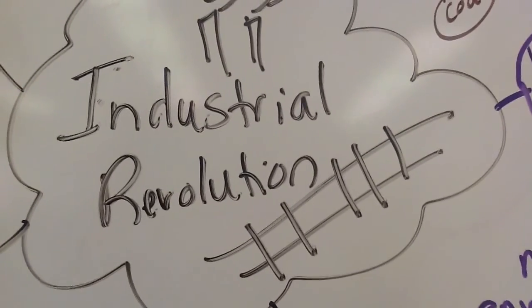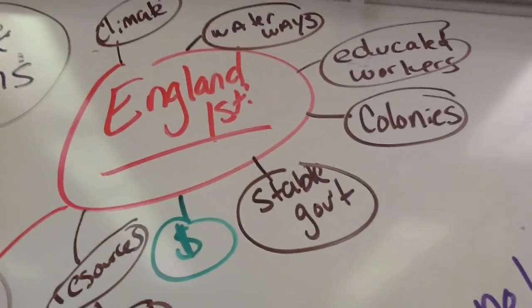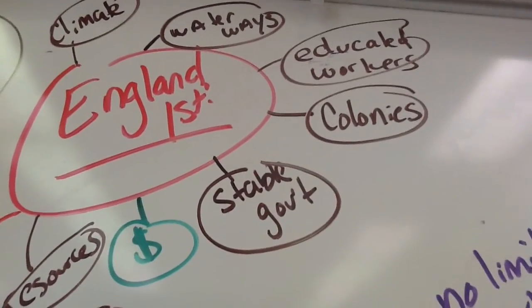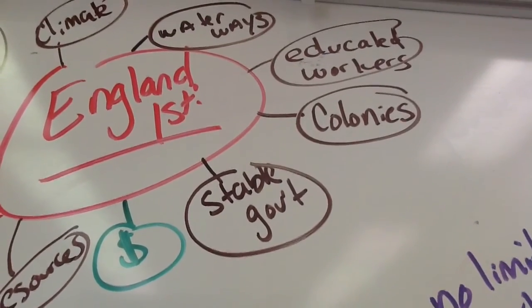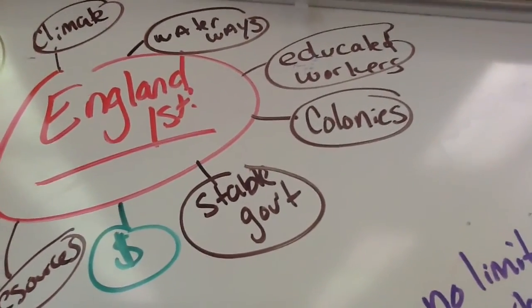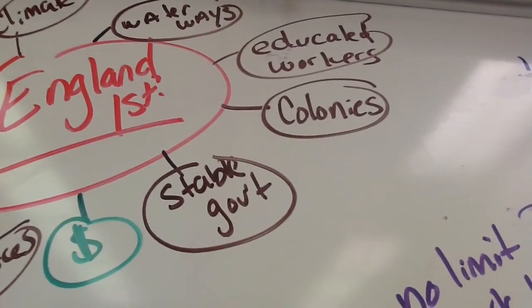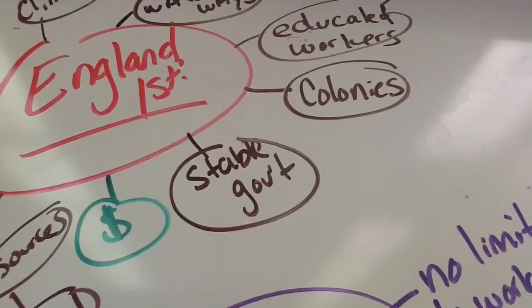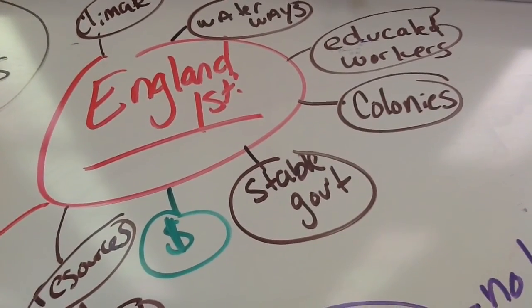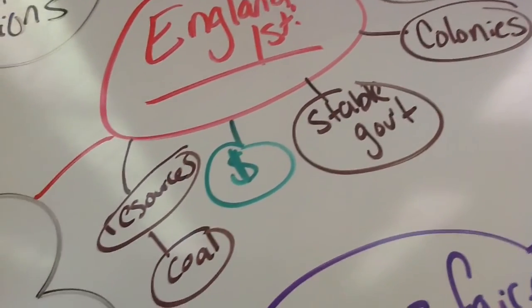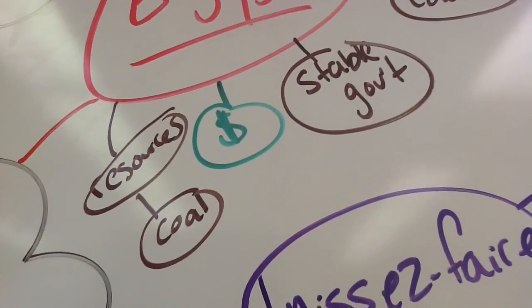The Industrial Revolution first began in England for many reasons. It had a damp climate, which was good for growing cotton — remember that textile industries were where the Industrial Revolution began. It had lots of waterways, which were good for steam power to run factories but also for transporting goods. It had a large, educated workforce that could operate the machines, and many colonies to get goods from and ship goods to. It had a stable government that didn't set limitations on business, lots of capital for investment, and ample resources such as coal to power steam engines.